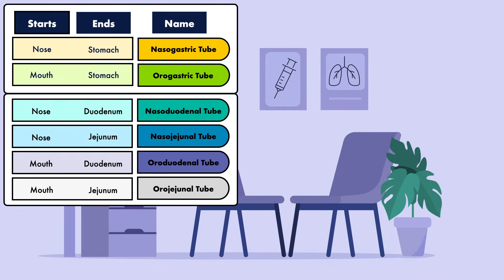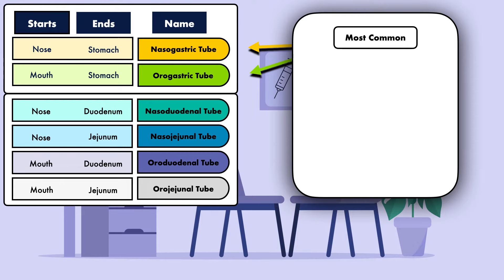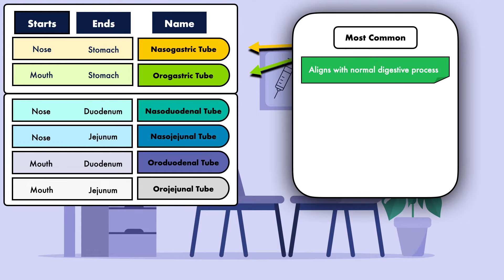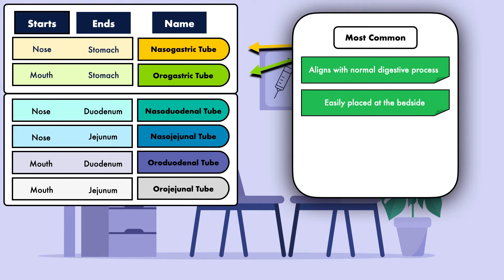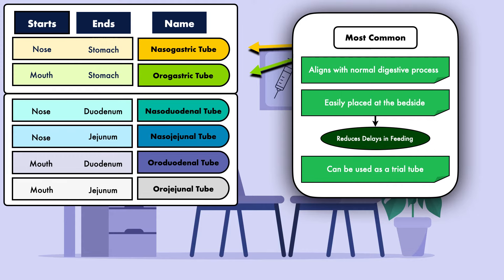Nasogastric tubes and orogastric tubes are the most common, and this is because they have three distinct advantages over the others. First, feeding into the stomach most closely aligns with the normal digestive process by allowing the stomach to serve as a reservoir where the formula mixes with gastric juices before being gradually released into the small intestine. Second, gastric tubes are easily placed at the bedside by a nurse, dietician, physician, or physician's assistant. Surgery and sedation are not required. This means there is lower risk of complications and a shorter time from decision to place to actual placement, which reduces delays in feeding. Third, a gastric tube can be used as a trial tube to assess tolerance to enteral nutrition.